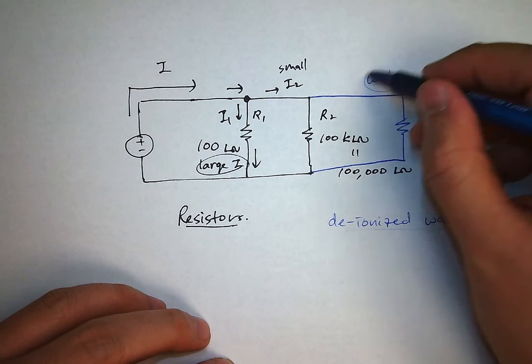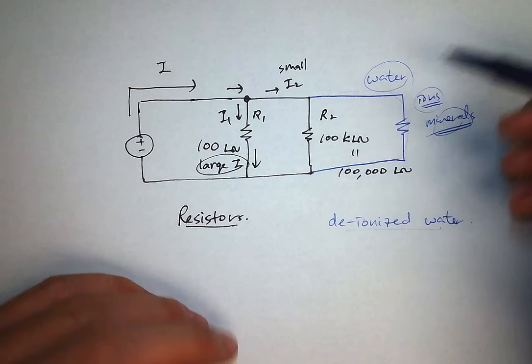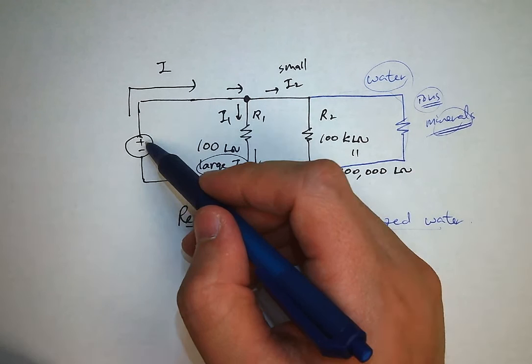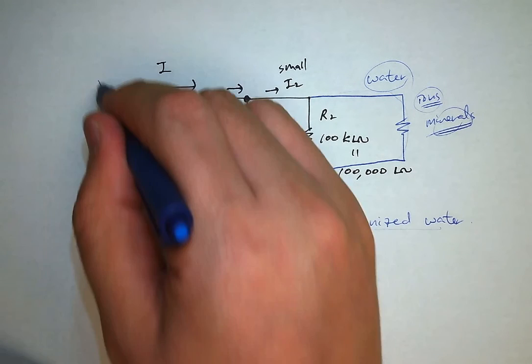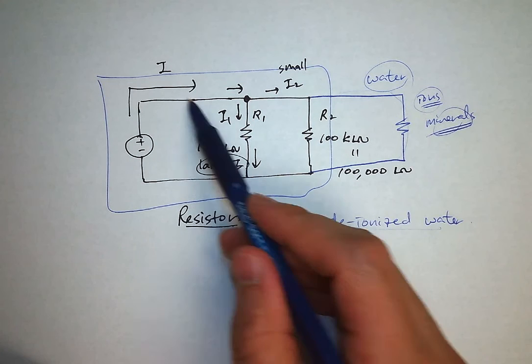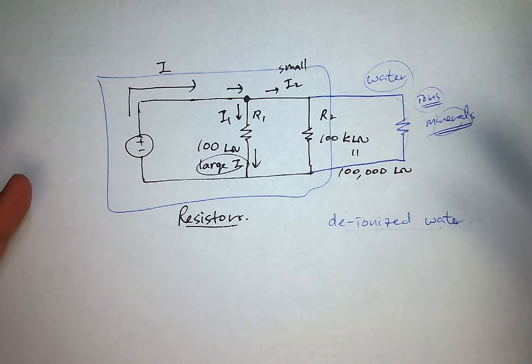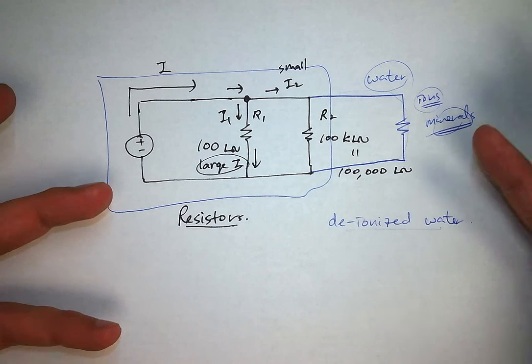But with regular water, you have these ions and minerals which is another path for the current to flow. So if this is your phone and you drop it in water, then the current will actually flow through here rather than through here. So your circuit won't work, meaning your phone won't work. That's the basic